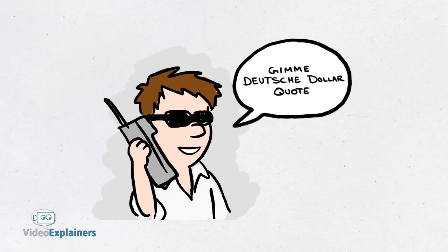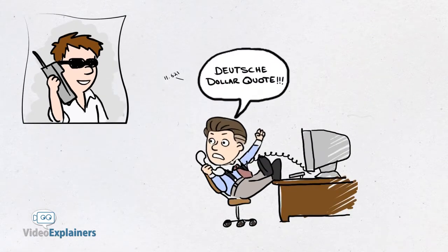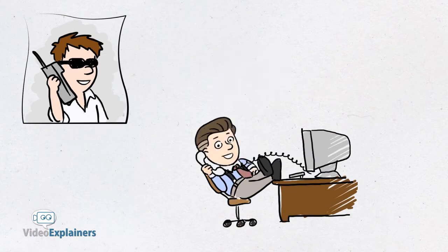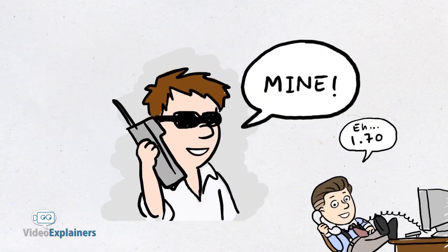Meanwhile, Tom hooks up with Bud and gets trading. But he's having a hard time making profitable trades. He's trading over the phone, so he can't be sure where the market really is.